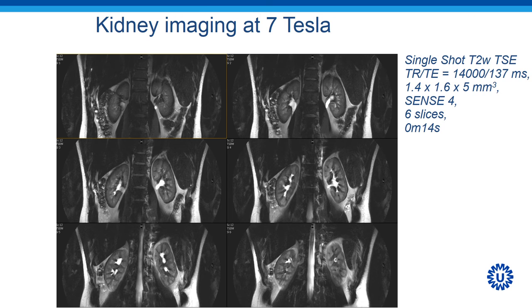This antenna is now being used routinely at our institute for a wide range of applications. Here I'll show two more of them. This slide shows kidney imaging at 7 Tesla, where we can see very good image quality for T2-weighted images.